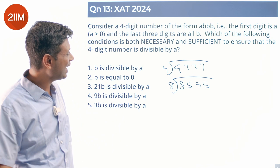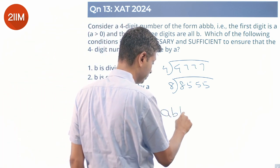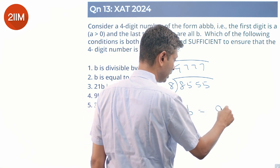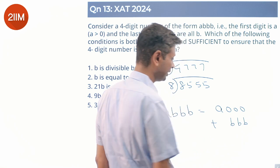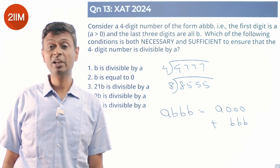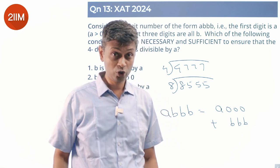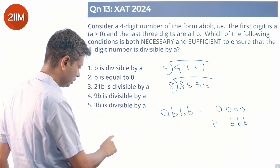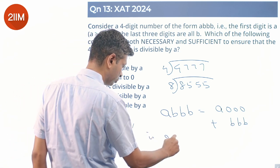It's a beautiful question because A triple B can be broken as A000 plus BBB. A000 is definitely a multiple of A. This is 1000A. 1000A is a multiple of A. So this question boils down to triple B is a multiple of A.